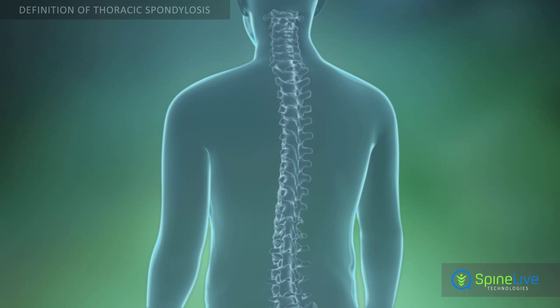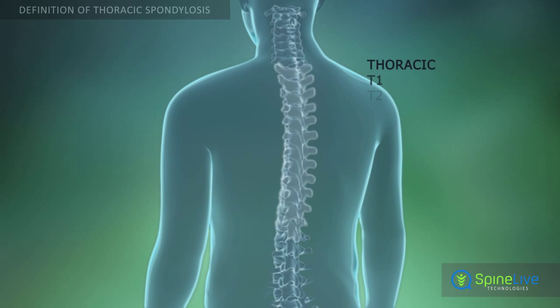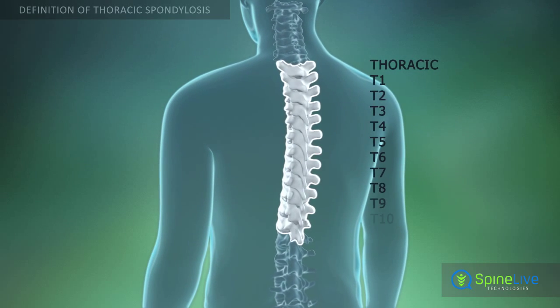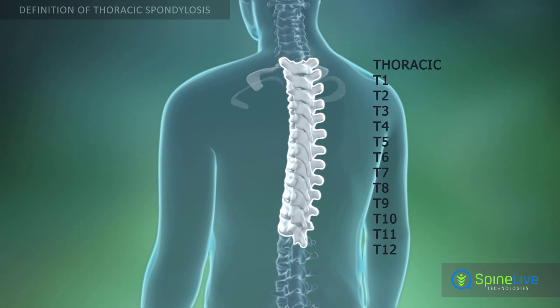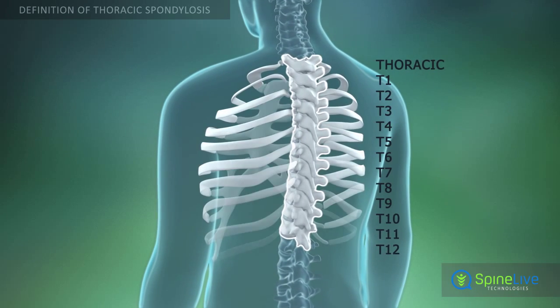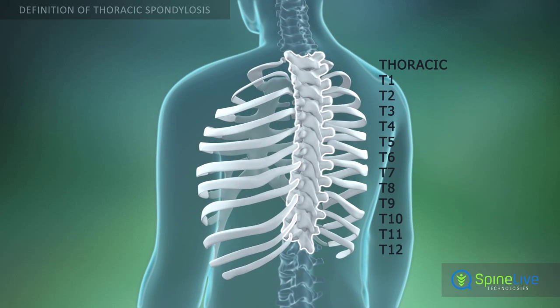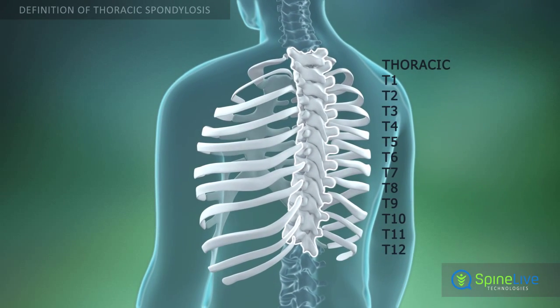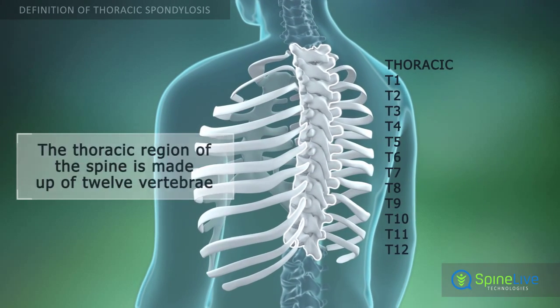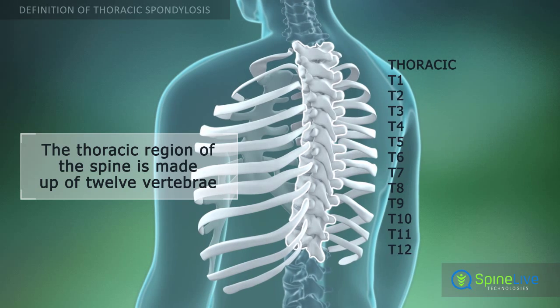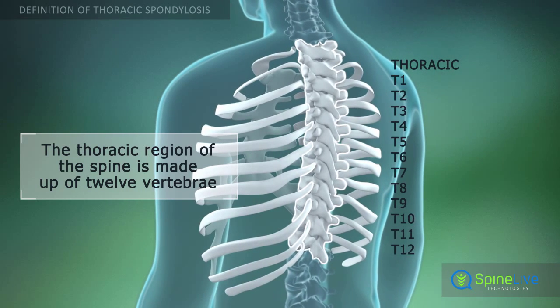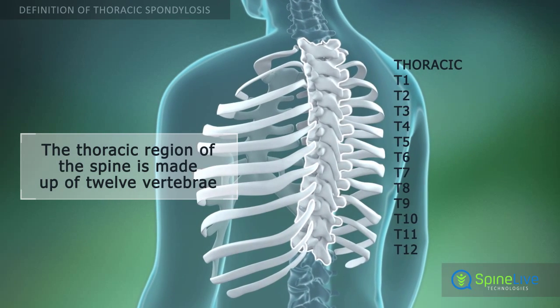The thoracic region of the spine is made up of 12 vertebrae, which are designated as T1 through T12. The thoracic vertebrae are joined by ribs to form your ribcage.